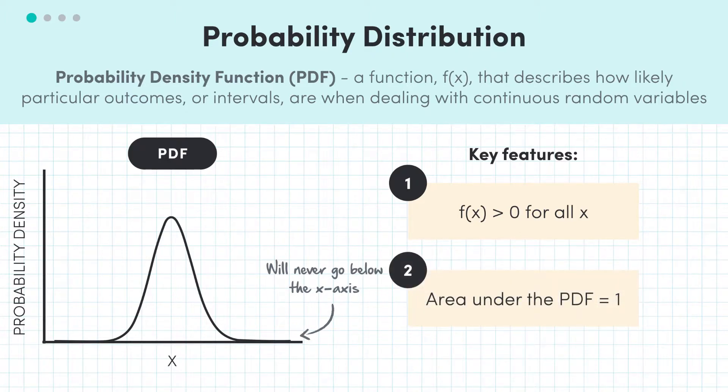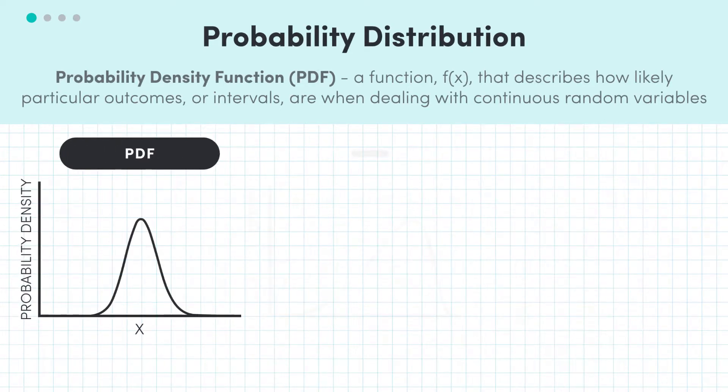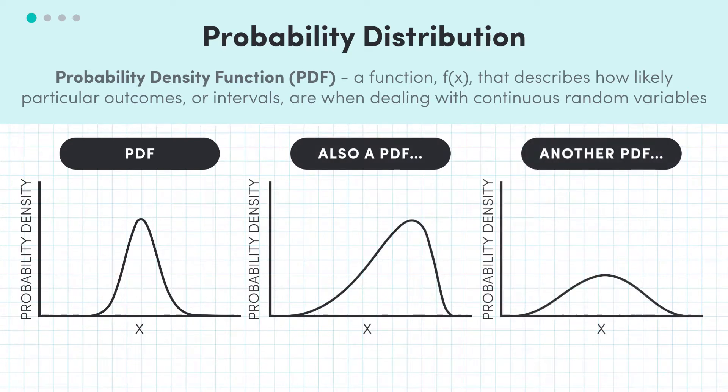Secondly, the area under the whole PDF is 1. You'll see more about why this is in a moment. But that's where the sweeping generalizations stop. A PDF is just a positive function, whose area underneath is 1. It could look like this, or this, or this. And every continuous random variable X has its own PDF.